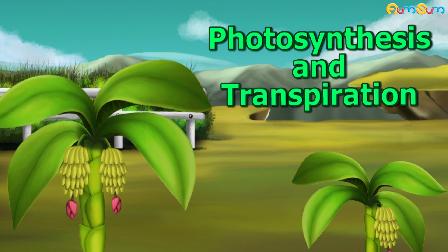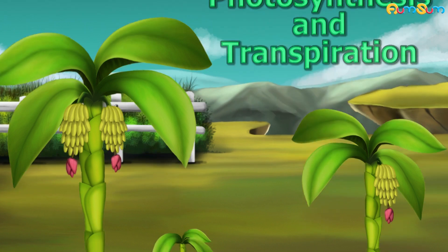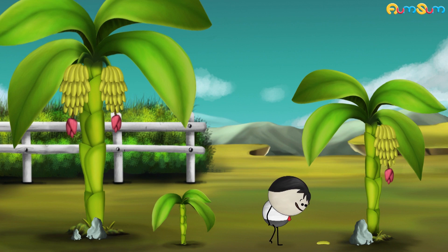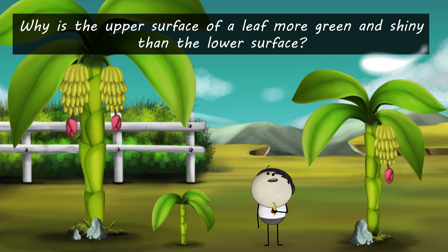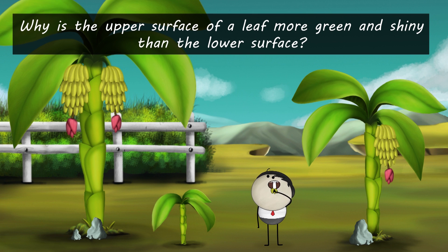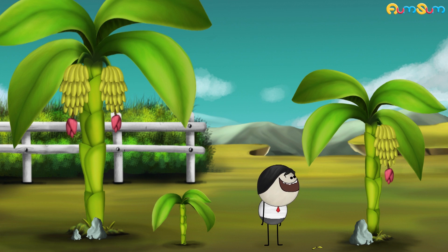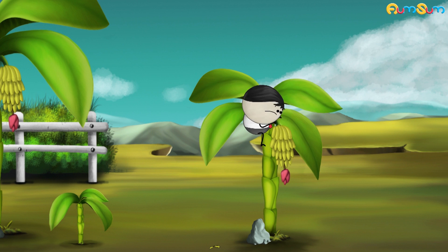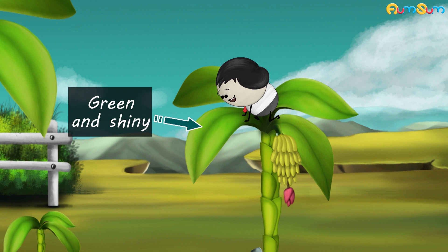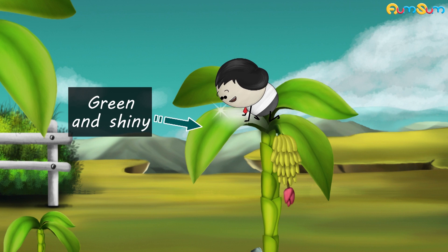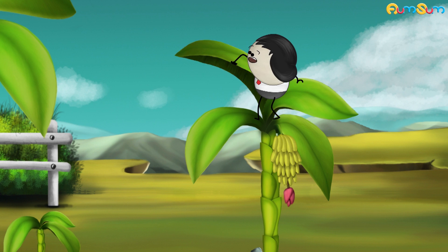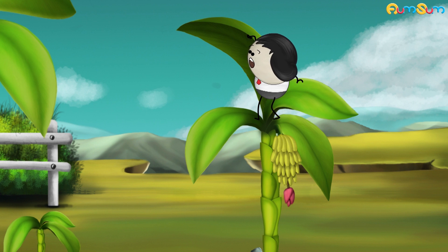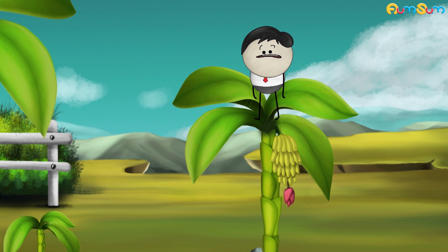Photosynthesis and transpiration. Why is the upper surface of a leaf more green and shiny than the lower surface? Yes, it is — you don't believe me? Why don't you check it? The upper surface of a leaf is more green and shiny, while the lower surface is comparatively less green and shiny.